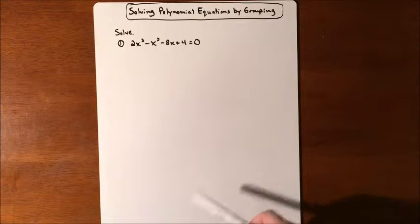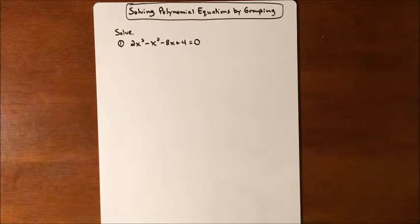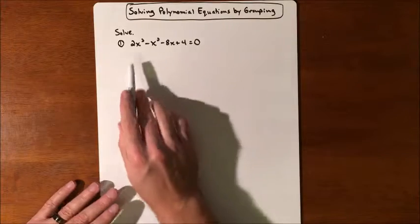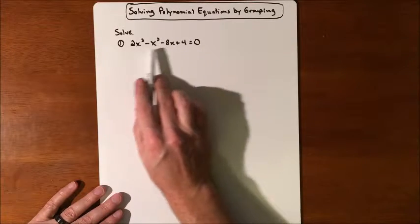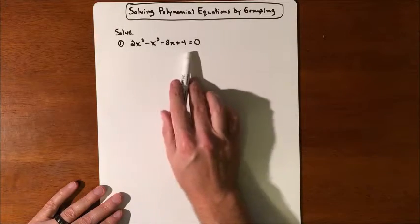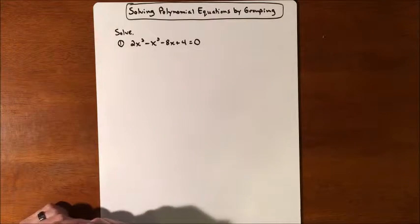In this lesson, we're going to be solving polynomial equations by grouping. So first thing is to recognize that we have four terms. If we have four terms, there's potential for grouping to work.